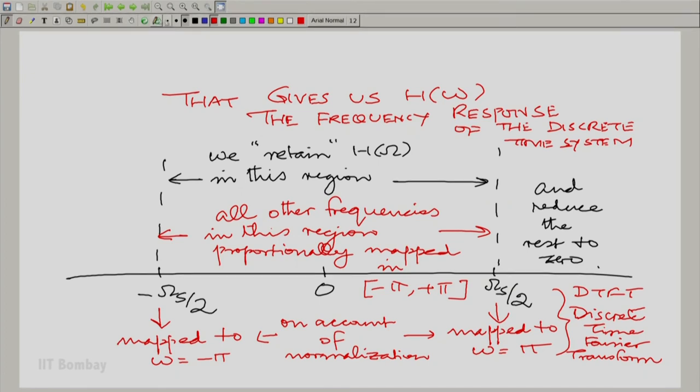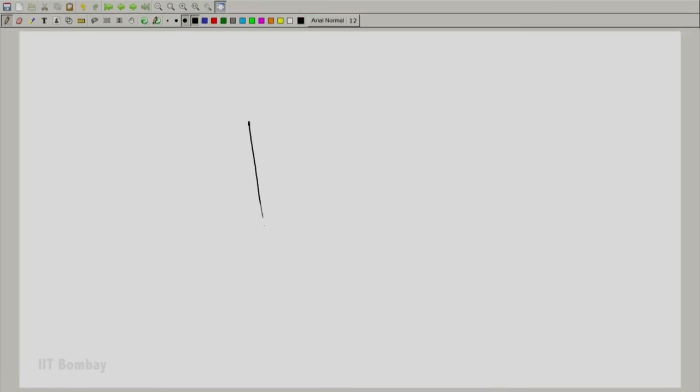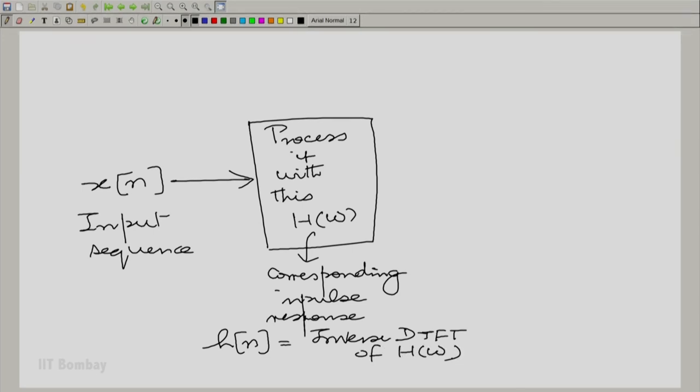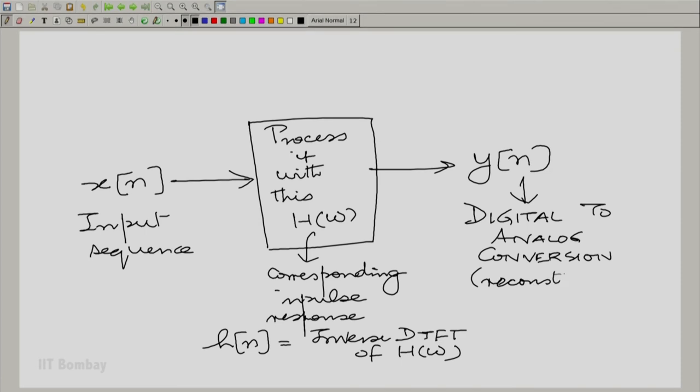Now we are all equipped. We can now take as we did the input stream of samples or input sequence x of n, process it with this H of omega or the corresponding impulse response small h of n, which is the inverse discrete time Fourier transform. That produces an output y of n. Now subject this to digital to analog conversion or reconstruction, and there we get the desired output y.